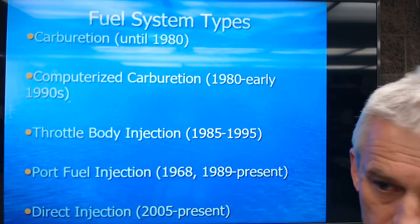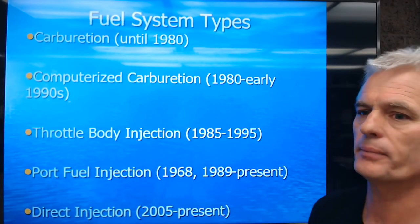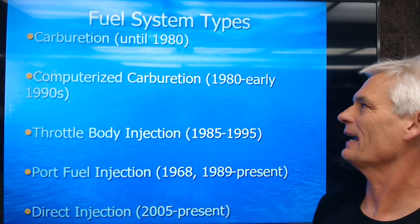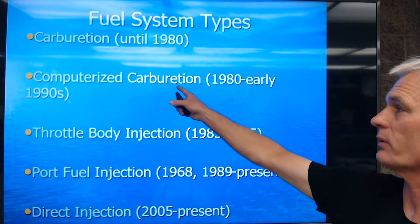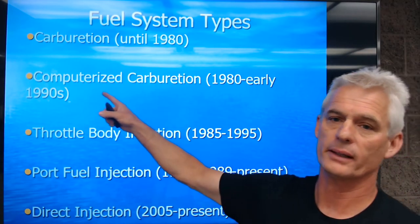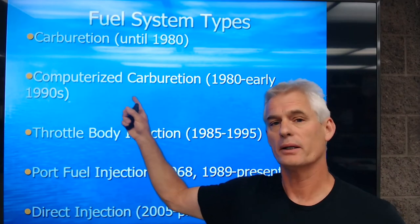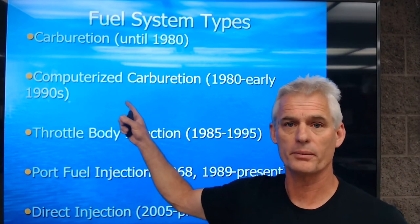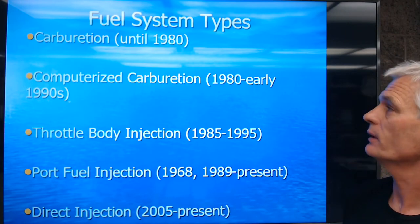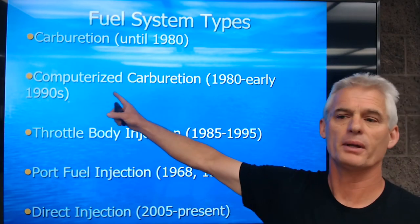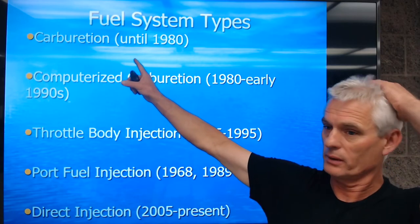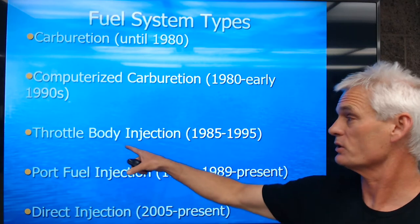A carburetor is a fuel-mixing device used all the way up until about 1980. Then we started seeing computerized carburation showing up approximately 1980 to the early 1990s. This was an attempt to get a leaner air-fuel mixture both for fuel economy and to reduce carbon monoxide and hydrocarbons in the atmosphere — applying computer controls to make it run a little better in terms of fuel economy and emissions.